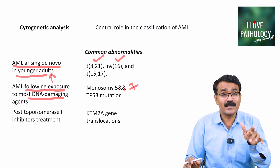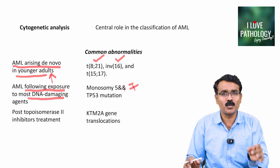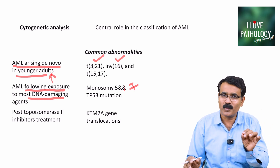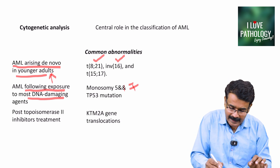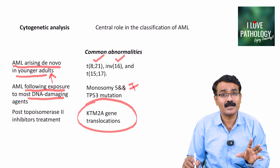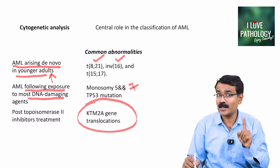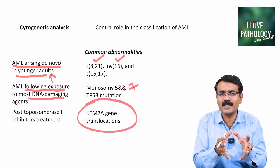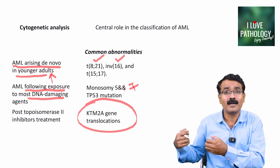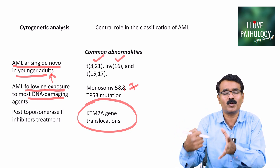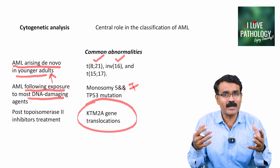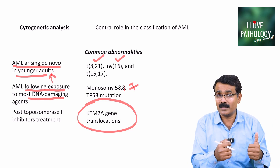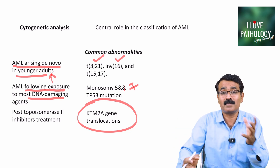An exception is when the patient is exposed to topoisomerase 2 inhibitors — AML developing after topoisomerase 2 inhibitor exposure is associated with KMT2A gene translocations, which carry the worst prognosis. Based on clinical features, drug history, and whether the patient had myelodysplastic syndrome, you can anticipate expected mutations. Classification of AML based on cytogenetic abnormalities is very important because it guides treatment and prognostication.